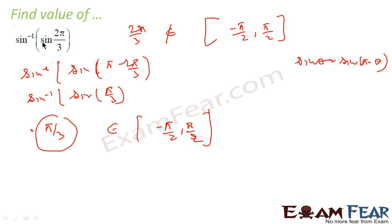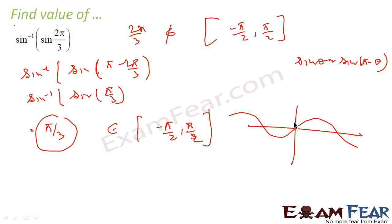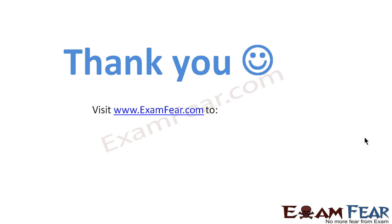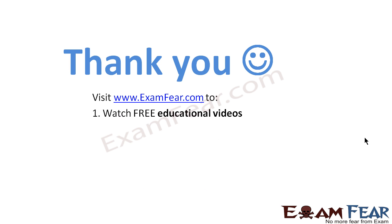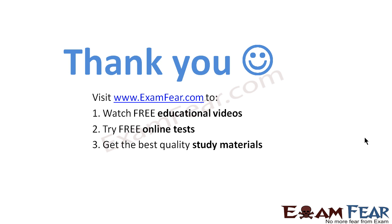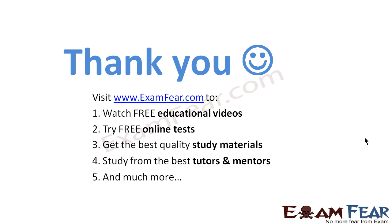So sin⁻¹(sin(2π/3)) = π/3, not 2π/3. Please make a note: the answer must be in the principal interval [−π/2, +π/2] for the sine inverse function. Thank you. Visit examfear.com to watch free educational videos, try free online tests, get the best quality study materials, and study from the best tutors and mentors. Thanks once again.